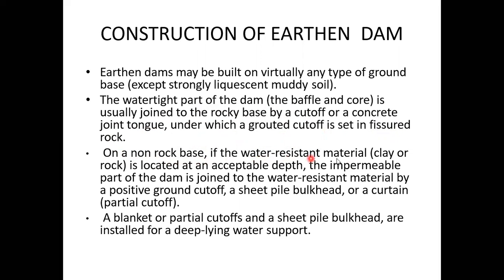On a non-rock base, if the water-resistant material — clay or rock — is located at an acceptable depth, the impermeable part of the dam is joined to the water-resistant material by a positive groundwater cut-off: sheet pile, bucket, or curtain. A blanket or partial cut-off and sheet pile workheads are installed for deep-lying water supports.